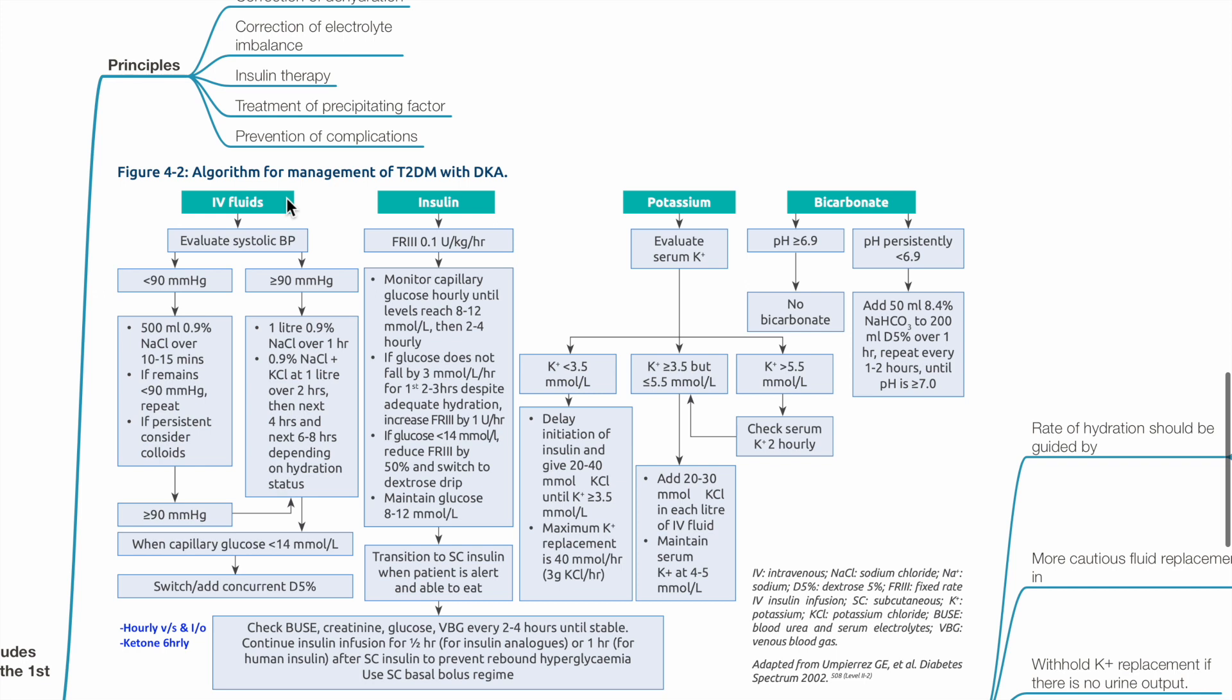IV fluids are used to correct dehydration. Evaluate systolic BP. If BP less than 90, give 500 ml of normal saline over 10-15 minutes. If remains less than 90 mmHg, repeat the 500 ml normal saline bolus. If persistent, consider colloids.